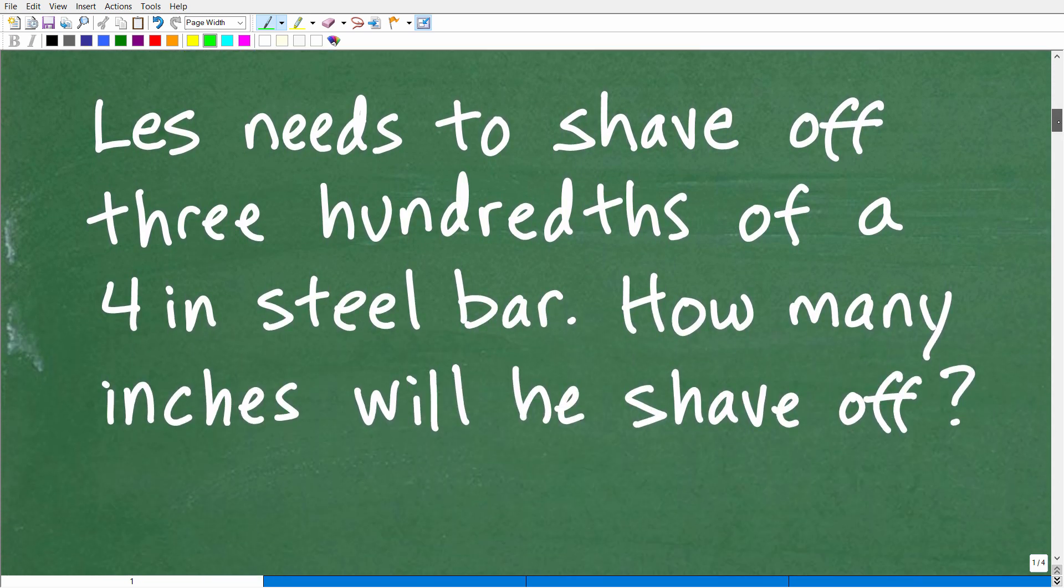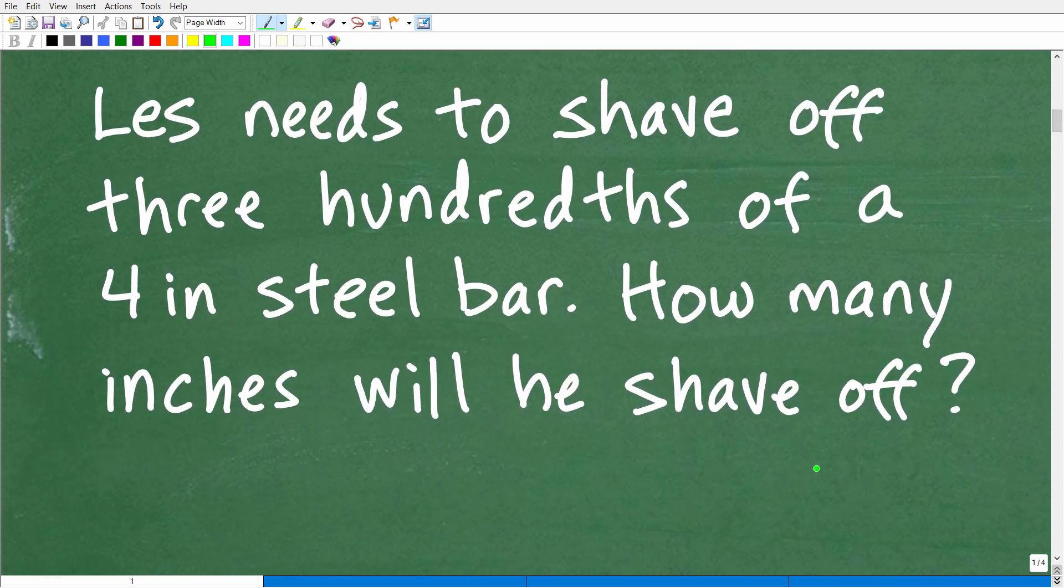Because I suspect that the people who struggle with this problem had difficulty in interpreting this part of the problem, and that is three hundredths. What number is three hundredths? Well, this goes to this concept of place value.